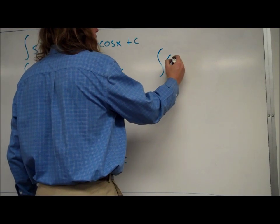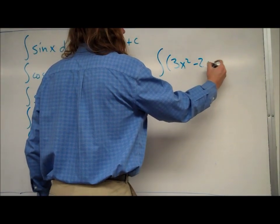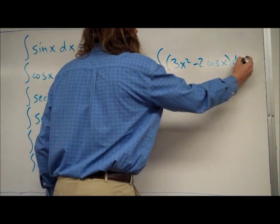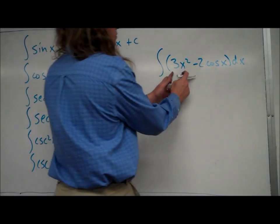Say we have the integral of 3x squared minus 2 cosine x dx. For the antiderivative of this, you just do the antiderivative of each term separately.